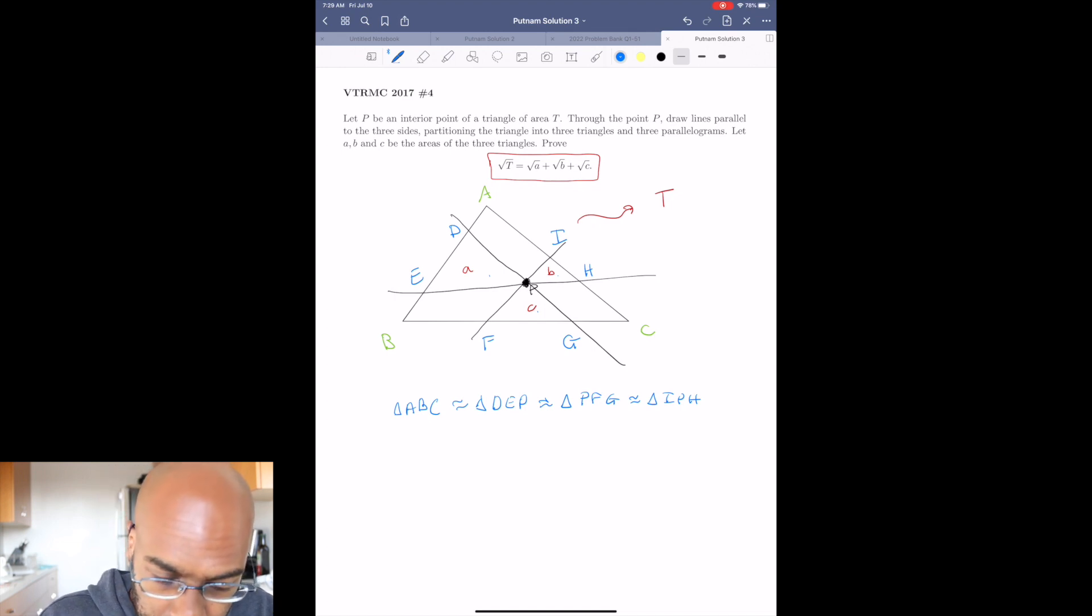So for example, because ADPI is a parallelogram, we know that this side length right over here, AD, is actually the same as the length IP. And then we also know that the length EB is the same as the length FC. And the remaining length in AB itself is this length DE right over here.